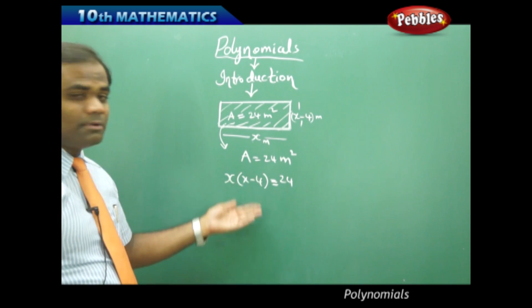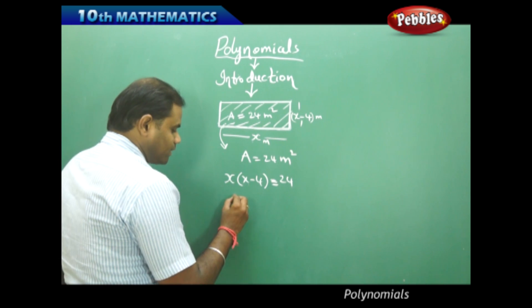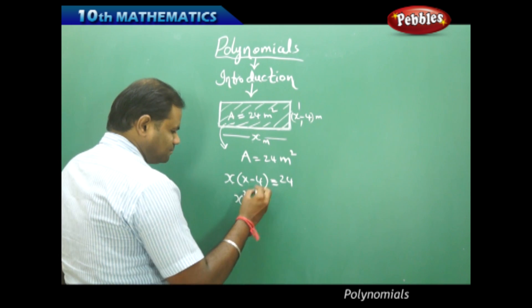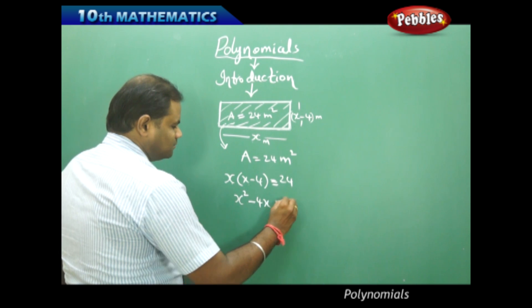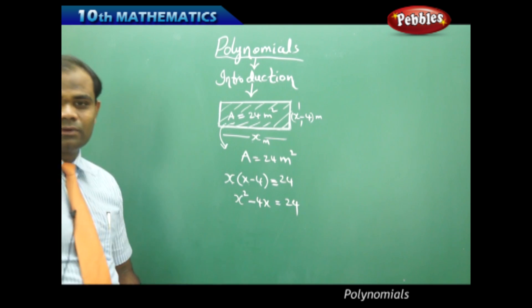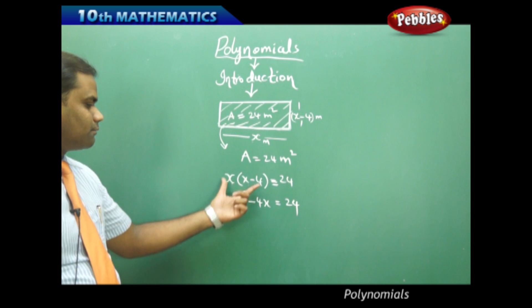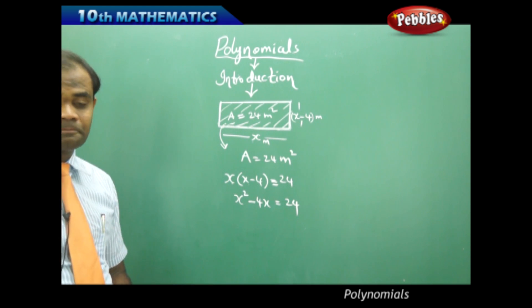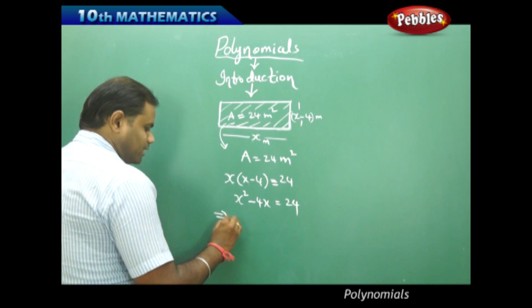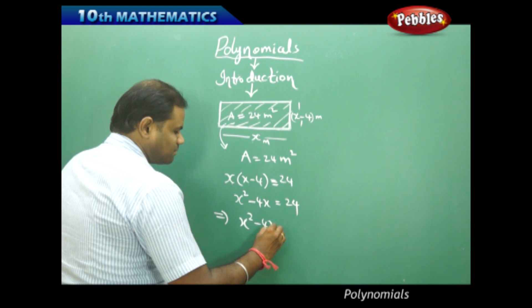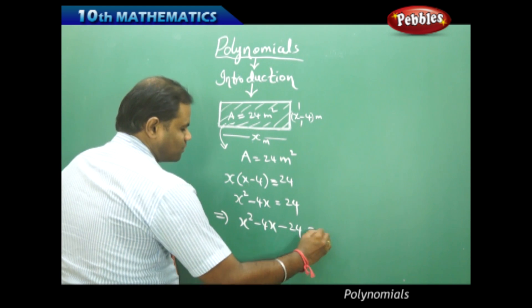So when I simplify this further, I see that x times x which is x squared minus 4x is equal to 24. Now therefore in this case I get x squared minus 4x minus 24 equal to 0.